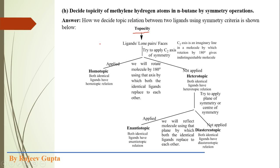For topicity, we have to check between ligands. Here we have a total of 4 methylene hydrogen ligands — HA, HB, HC, HD. First, we apply the C2 axis of symmetry. We choose one axis of the molecule and do a 180-degree rotation. If two ligands interchange positions and the resulting molecule is identical, those two ligands are equivalent and homotopic. If the C2 axis of symmetry can be applied and both ligands interchange to give an identical molecule, they are homotopic.